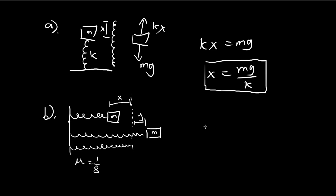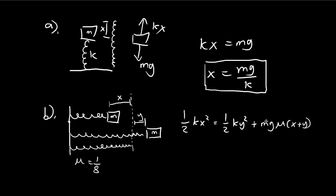The way we find y is by using energy. The amount of energy in the system, which is 1/2 kx², is equal to the eventual potential energy remaining plus the energy lost to friction. The energy lost to friction is force times distance — the friction force is mg times the frictional coefficient, multiplied by the distance traveled. This is the amount of energy lost to friction, converted into heat.